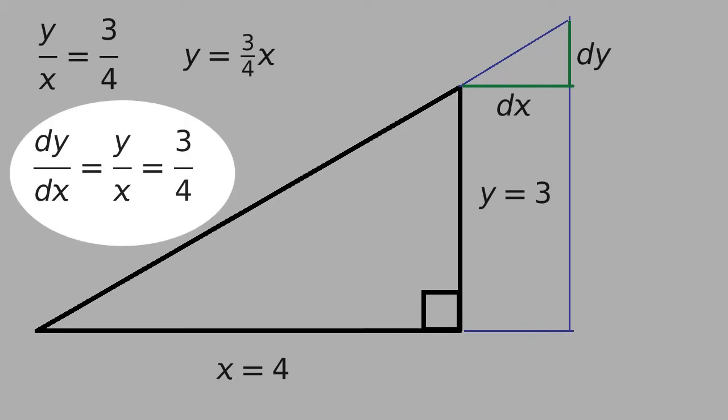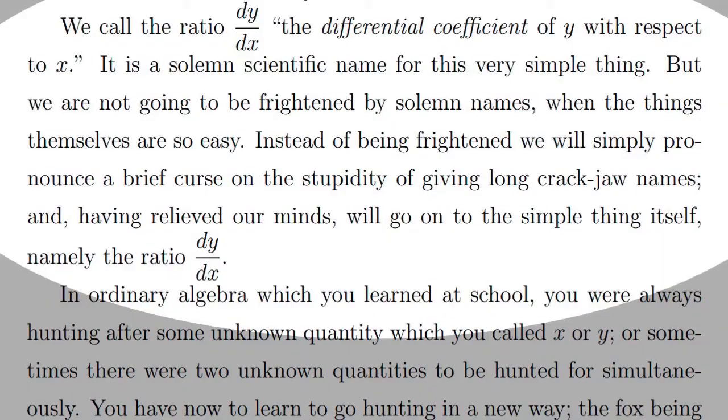Now, we won't call it DY divided by DX because when we're dealing with infinitesimal amounts, that starts to get picky. So let's just call it DY by DX. We can take a look at what Thompson says about nomenclature. We call the ratio DY by DX, the differential coefficient of Y with respect to X. It is a solemn scientific name for this very simple thing. But we are not going to be frightened by solemn names when the things themselves are so easy.